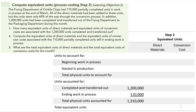Using the schedule: 1,200,000 units were completed and transferred out, and 110,000 remain in ending work in process, giving 1,310,000 total units to account for. Units completed and transferred out are 100% complete, so equivalent units are 100% of 1,200,000 — giving 1,200,000 equivalent units for both direct materials and conversion costs.